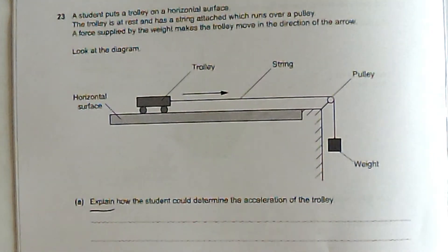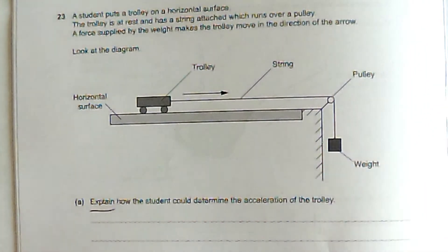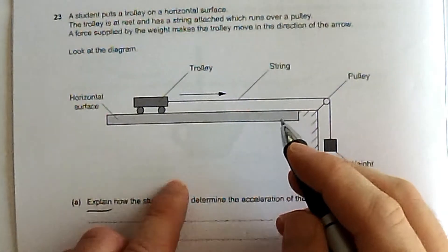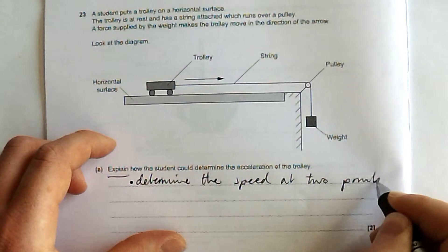I'll tell you the way that the mark scheme have gone for it, and I'll tell you the way that I would do this in practice. Because it would be very hard to do it their way without using light gates or something like that. And that will come back later on. So they say, well determine the speed at two points.